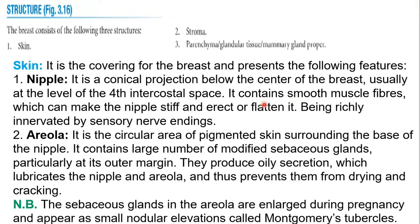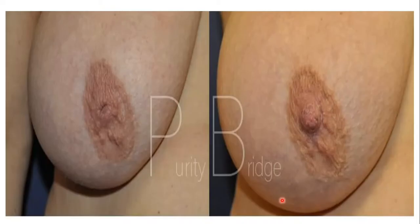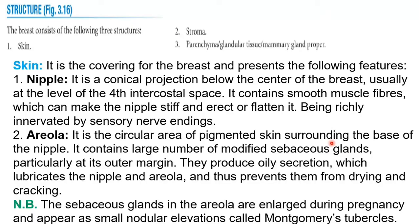The nipple contains smooth muscles and is very rich in nerve fibers because it is very sensitive. The areola is present around the nipple and is more pigmented. It consists of modified sebaceous glands, which secrete oily secretion to prevent the breast from becoming dry and cracking. These projections are known as the Montgomery tubercles. The sebaceous glands in the areola enlarge during pregnancy and appear as small elevations called Montgomery tubercles.